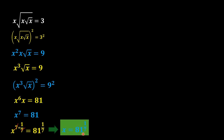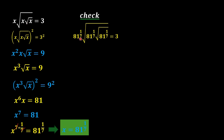Now we check the answer. For this purpose we insert the value of x, which is 81 to the power one over 7, back into the main equation in place of every x. In the same way, we substitute 81 to the power one over 7 for both the remaining x values, and equal to 3 remains on the other side.